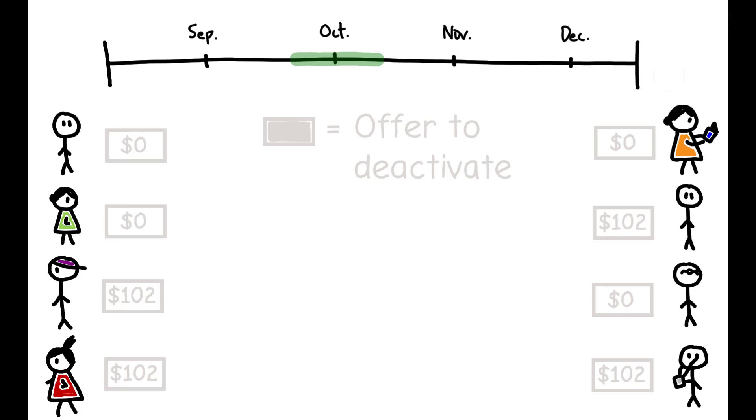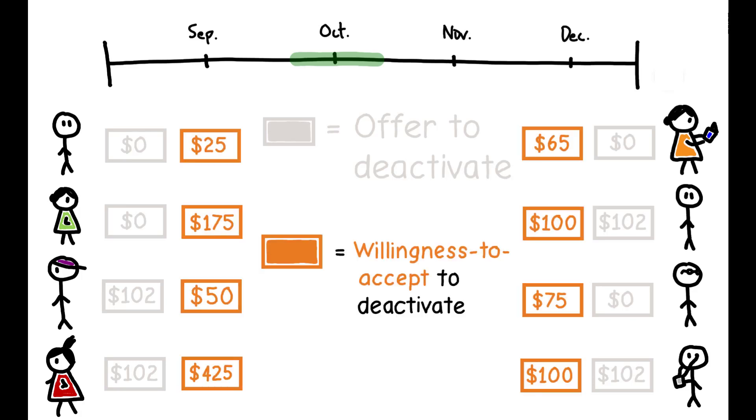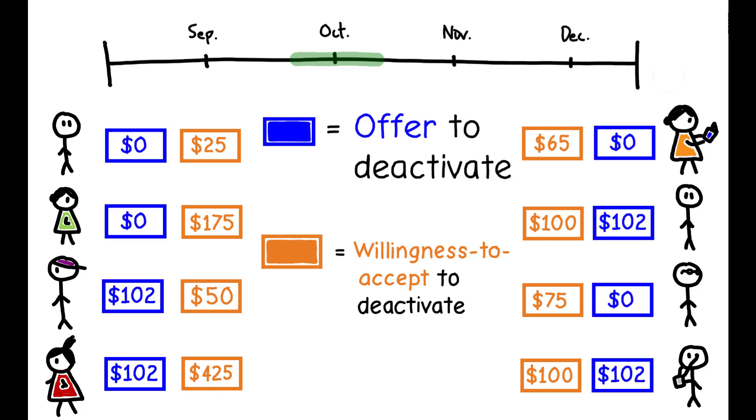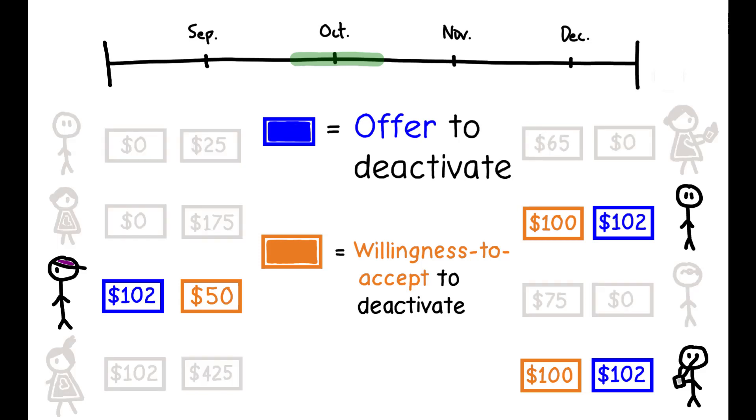Before these offers were revealed, participants completed a survey in which they were asked to provide the smallest dollar amount they would be willing to accept in exchange for deactivation. The offers were then revealed, and those whose willingness to accept was less than their assigned offer were asked to deactivate their accounts for the following four weeks.